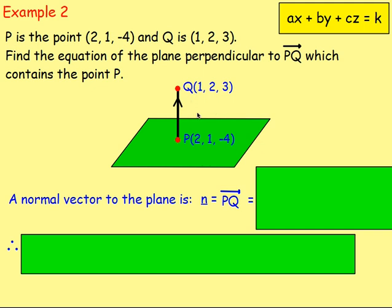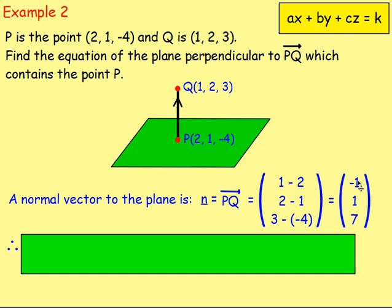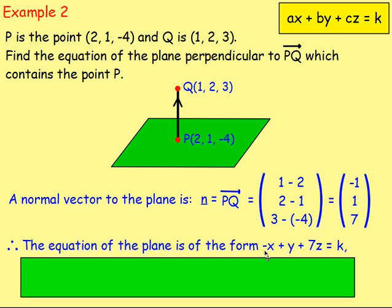To work out PQ, we have Q minus P: that's (1, 2, 3) minus (2, 1, negative 4). So 1 minus 2, 2 minus 1, and 3 minus negative 4 gives us negative 1, 1, and 7. That means the equation of the plane — because the normal vector has components negative 1, 1, and 7 — will be of the form negative 1x plus 1y plus 7z equals k.